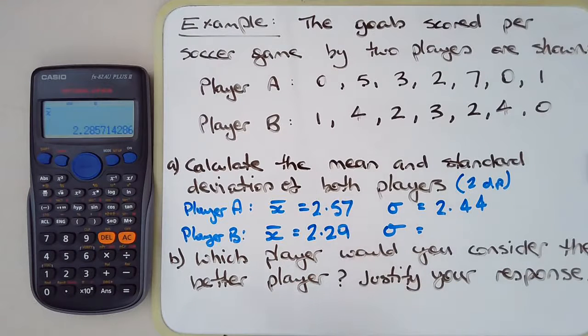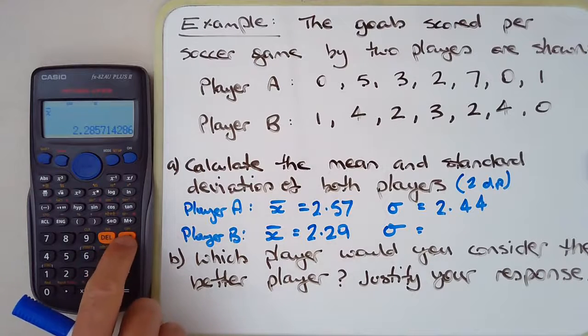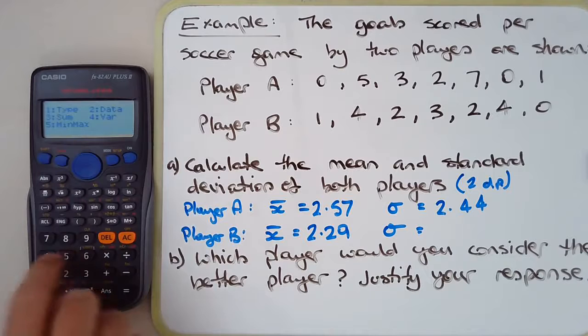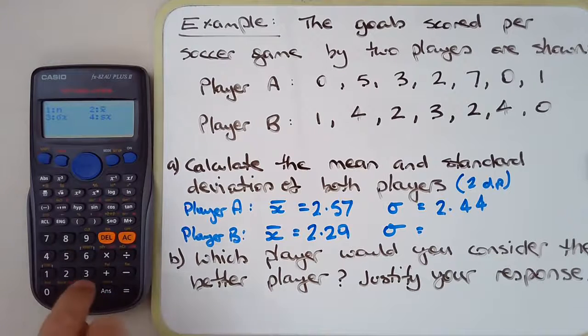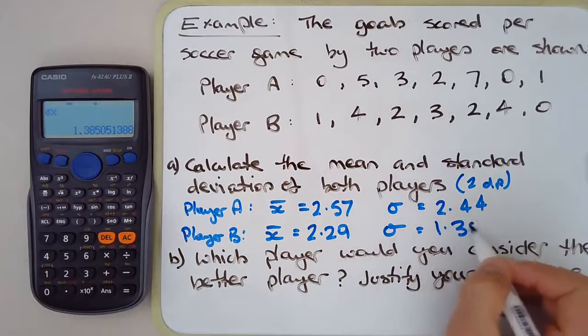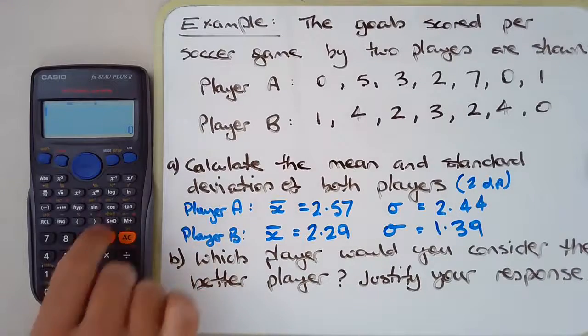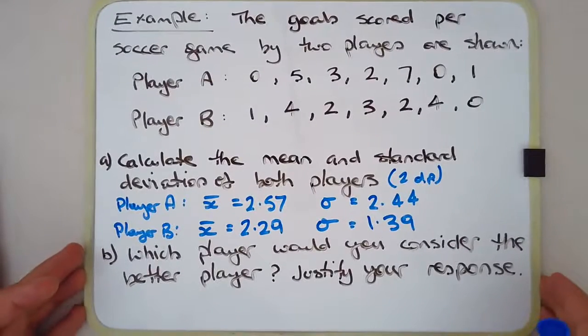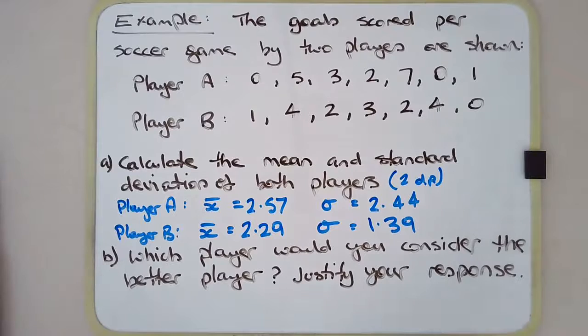Fairly close means, I would dare say. I wouldn't say it's a significant difference—it's not like a whole goal difference. Let's have a look at the standard deviation: 1.39. I'll give you some food for thought. I don't know why I said that—I think it's nearly dinner time, nearly 5 p.m.